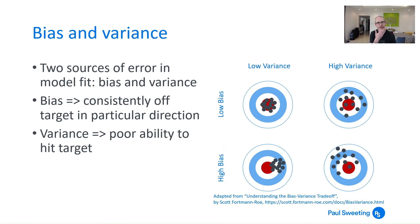One way of thinking about boosting and bagging is in terms of these ideas of bias and variance which are the two main sorts of model error that you've got. So bias means that you're consistently off target in a particular direction. And variance means that you're not very good at hitting the target.